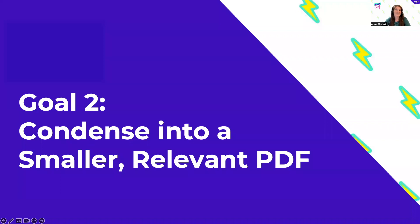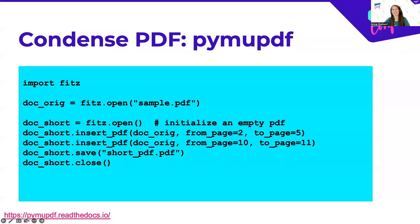For this next example, it's really about turning a 500-page PDF into something like a smaller five-page relevant PDF for your collaborators. To do that, we'll use PyMuPDF again. You open the sample, then call another open statement to initialize an empty PDF. From there, you choose which pages from the original PDF you want to insert into the new shorter one, and then save that off into your new shorter file.